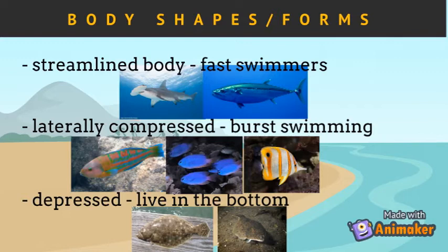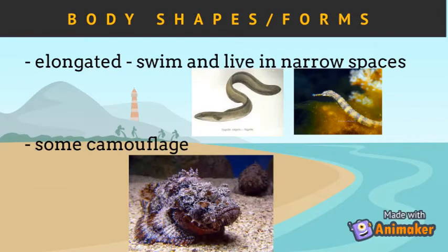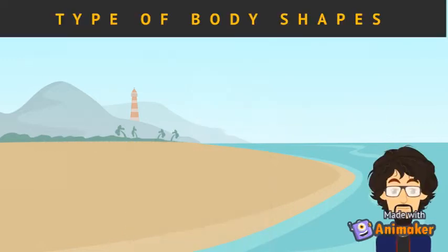Others have a body flattened from top to bottom, an adaptation for living on the bottom or near the surface. This includes flounders, flatfishes, and rays. Elongated fish such as eels, trumpetfishes, and pipefishes swim and live in narrow spaces in rocks, coral reefs, and vegetation.